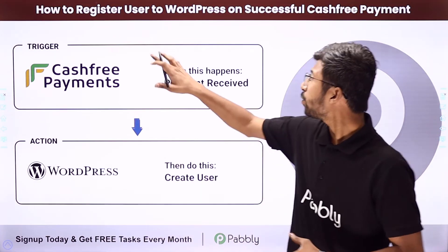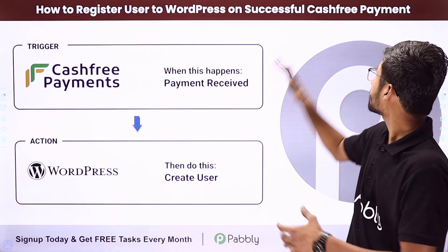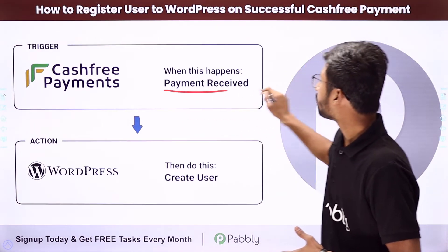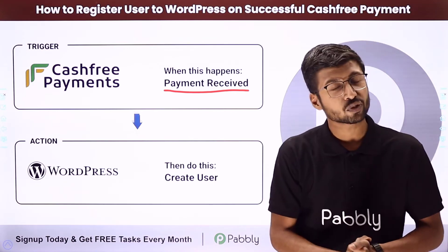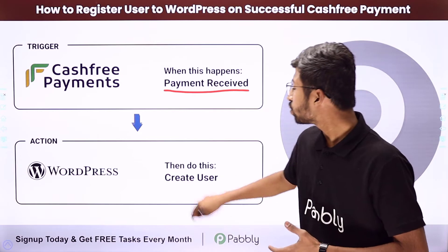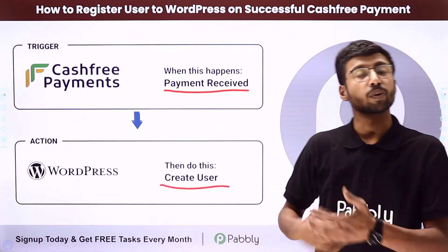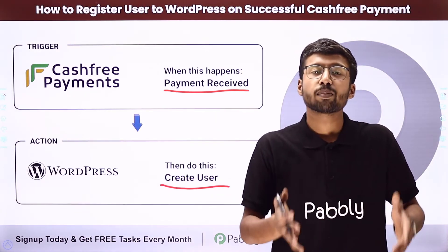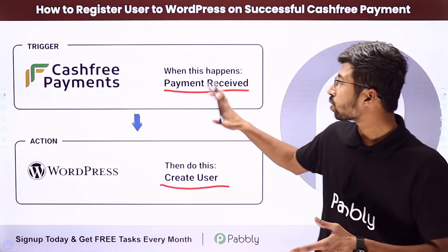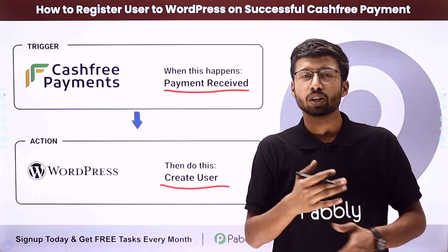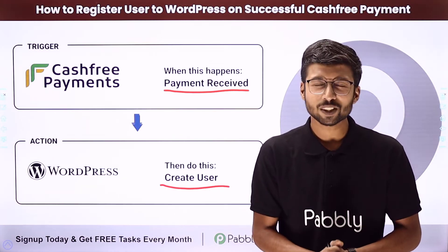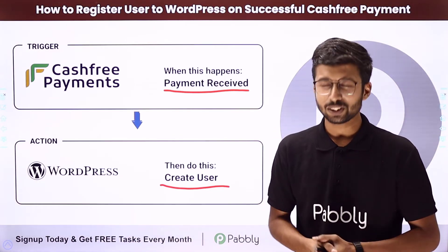In this video, we will learn how to register a user to WordPress on successful Cashfree payment. In this automation, whenever we receive a payment in a payment gateway like Cashfree, instantly and automatically, the customer who made the payment will be added as a user on our WordPress site. Using this automation, if you have exclusive content only for paid customers, you can add those customers as a member or viewer in your WordPress site.